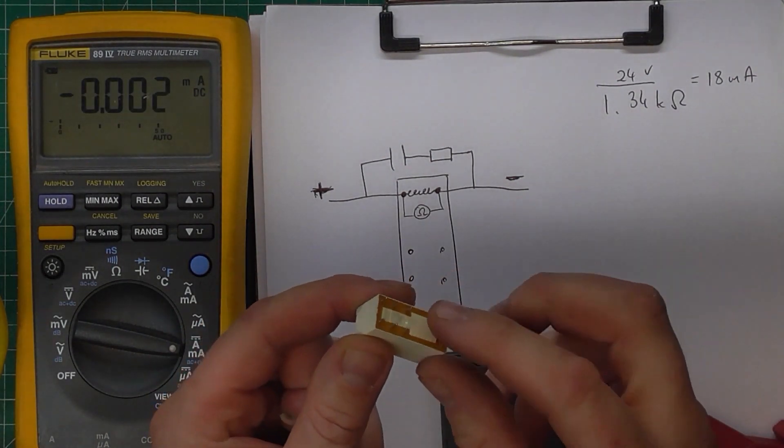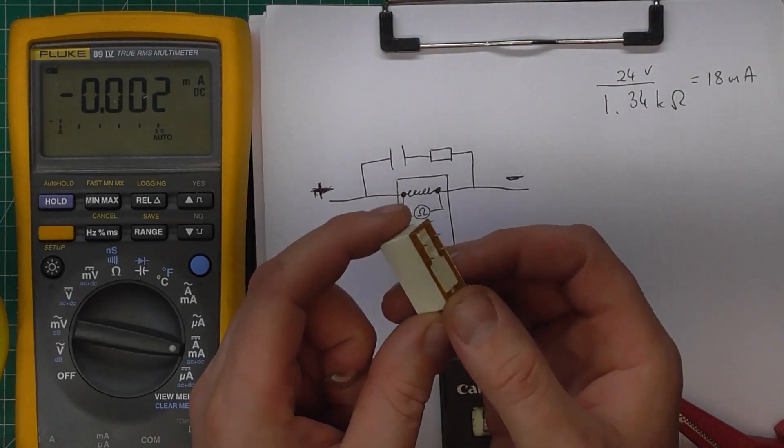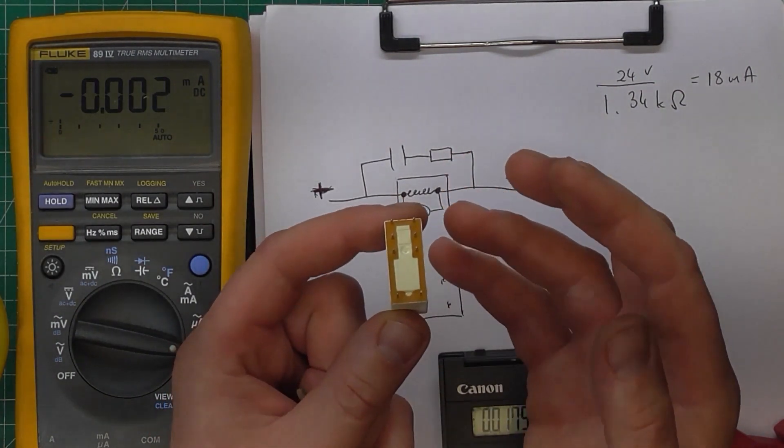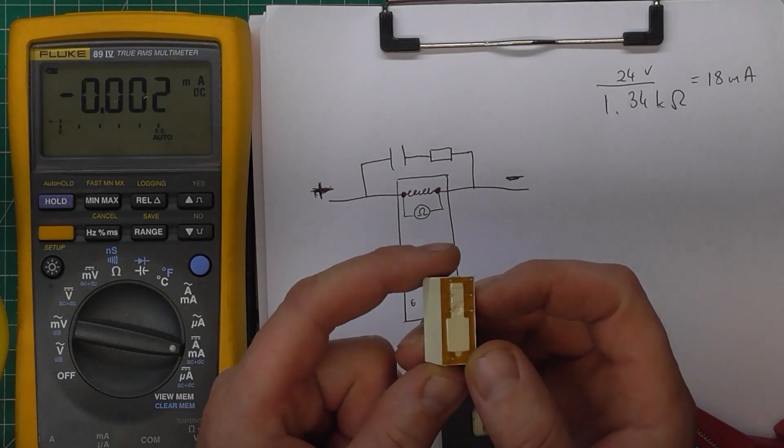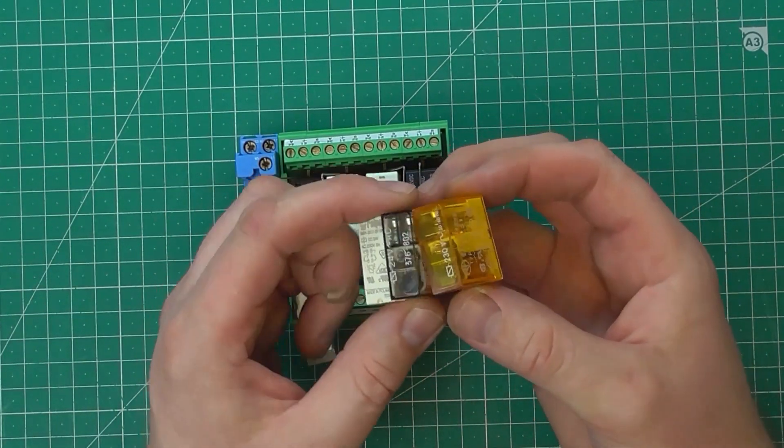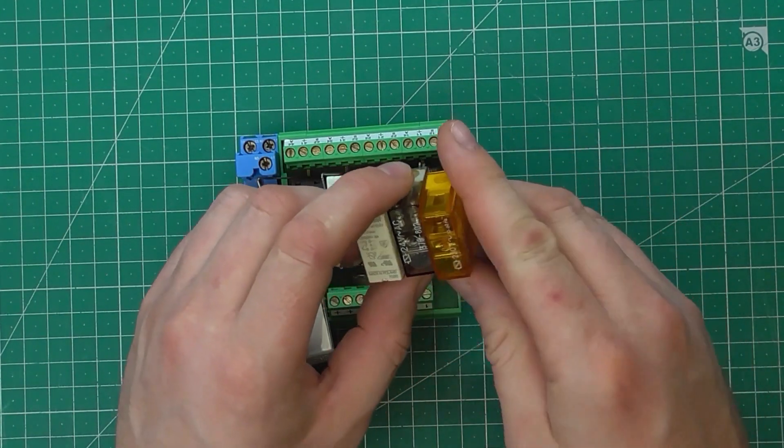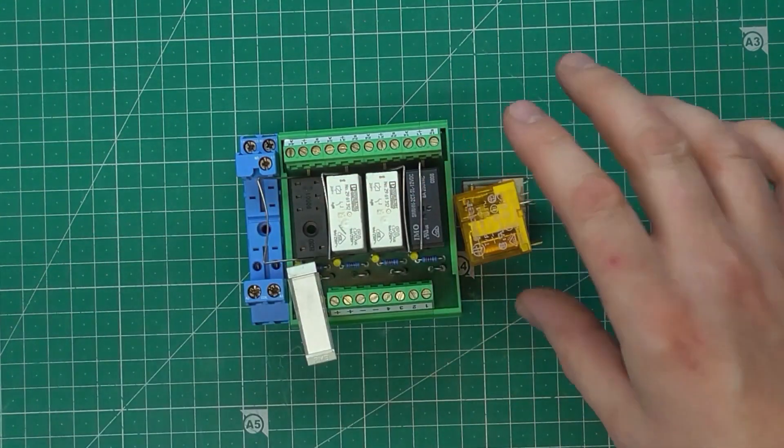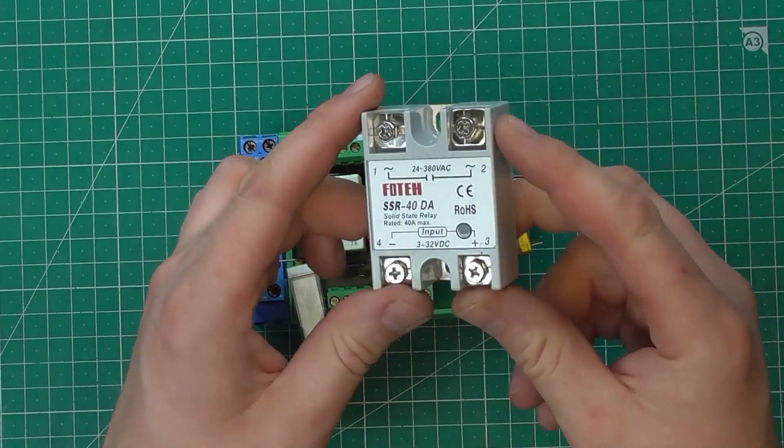The next disadvantage is the mechanical construction. The contacts can be burned, the whole mechanism can be damaged, the coil can be damaged, and this is a very big disadvantage.